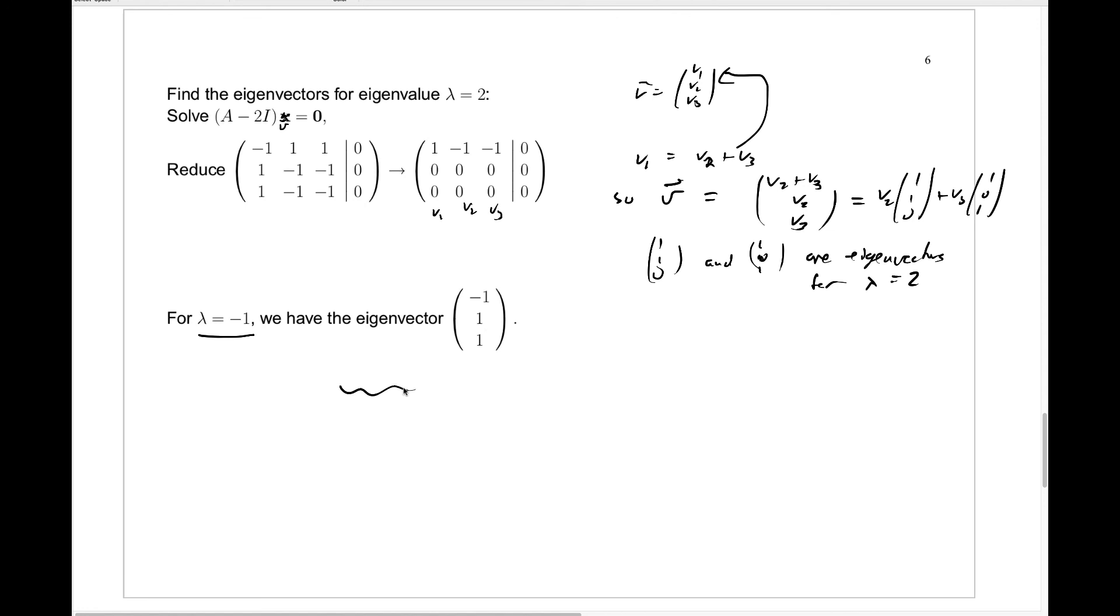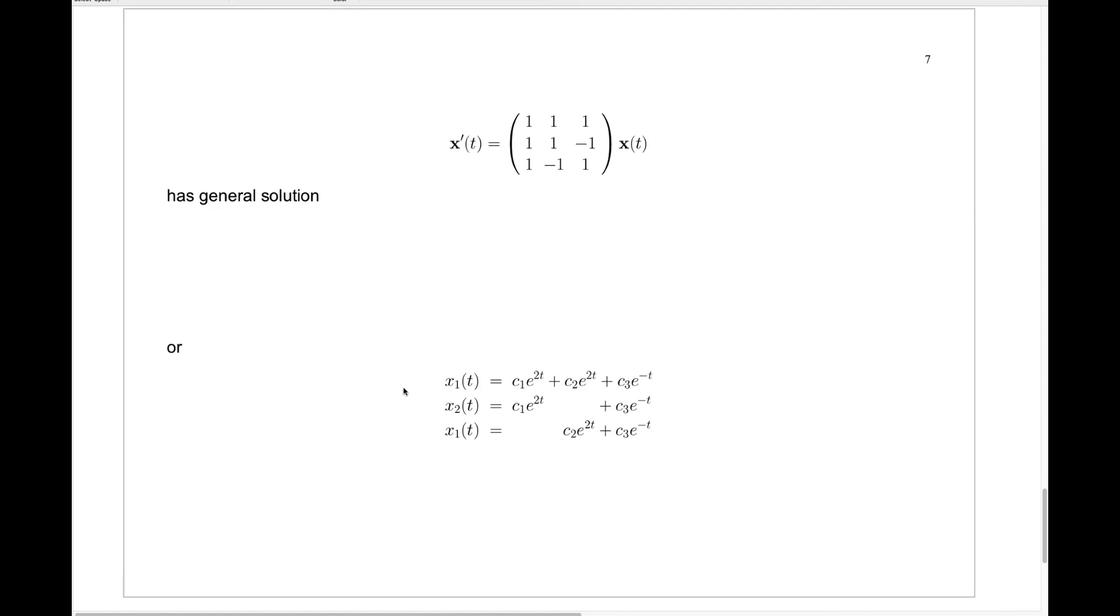So here is our matrix A. How do we solve this? Well, we have our solutions. From the eigenvalue 2, we had—the book actually uses this notation—x1, one solution, and this is a vector solution, would be e to the 2t times our first eigenvector with eigenvalue 2, (1, 1, 0). We have a vector solution x2 of t which is e to the 2t times our second independent eigenvector with eigenvalue 2.